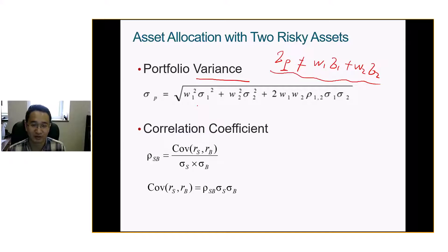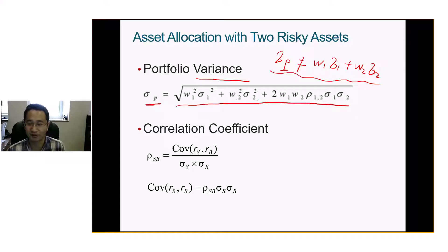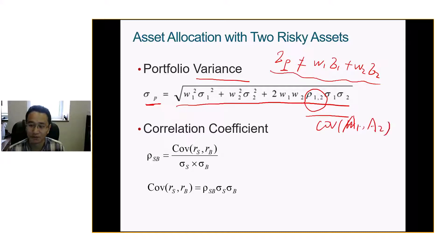That's why Markowitz won the Nobel Prize in economics. What he said is: if you have two assets, then the variance of the portfolio should be a function of correlation — or more precisely, the whole part is a covariance, the covariance of S1 and S2. I use S for stock and B for bonds; we can just change this to stock.